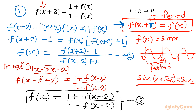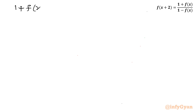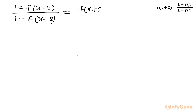Now you can see that in equation 2 we have f(x), and in equation 3 we also have f(x). Since both refer to the same function f(x), we can equate them: [1 + f(x−2)] / [1 − f(x−2)] = [f(x+2) − 1] / [f(x+2) + 1].